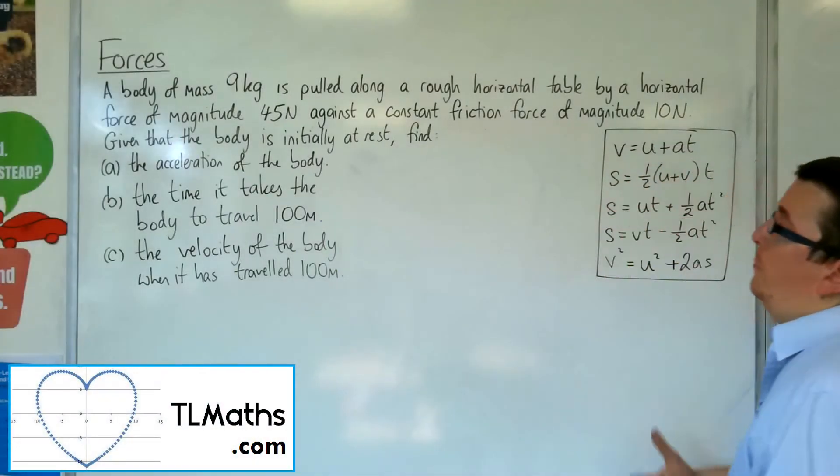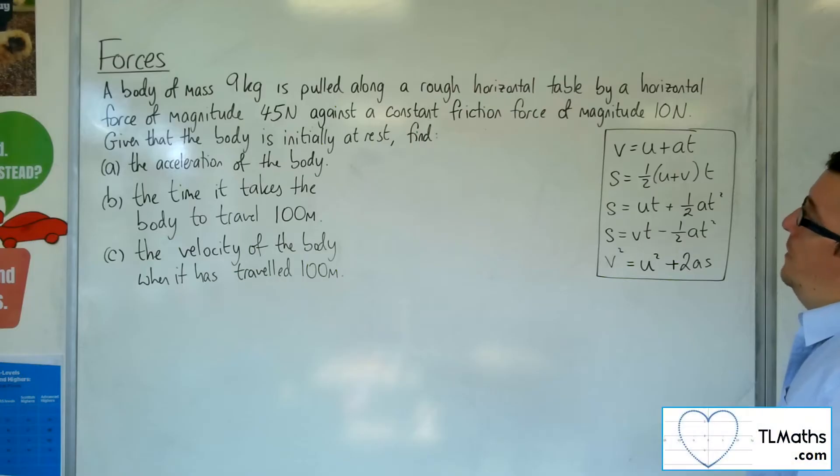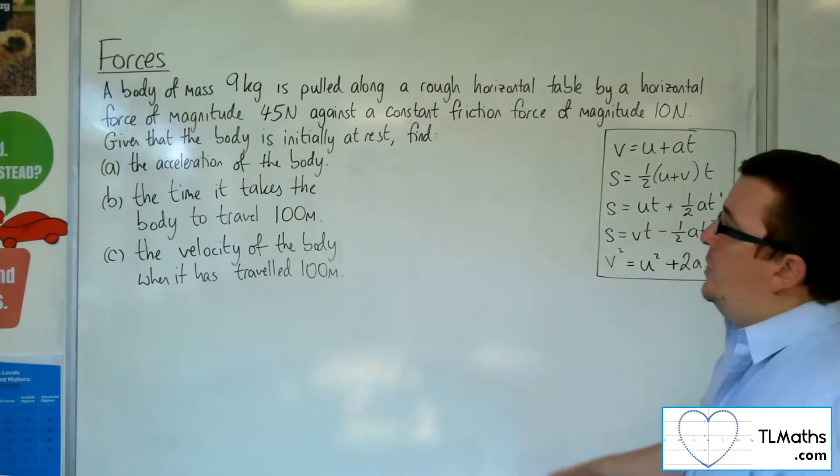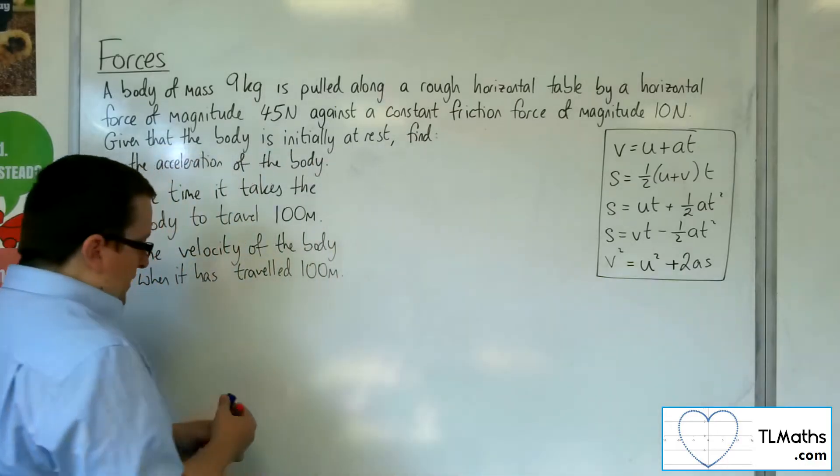So in this video, we've got a body of mass 9 kilos pulled along a rough horizontal table by a horizontal force of magnitude 45 newtons against a constant friction force of magnitude 10 newtons. Given that the body is initially at rest, find, first of all, the acceleration of the body.